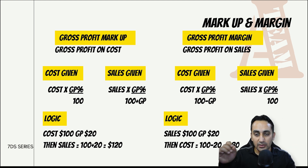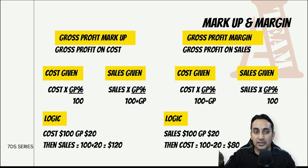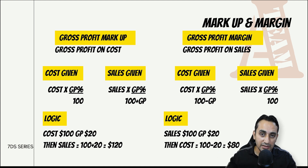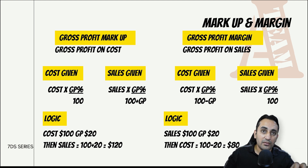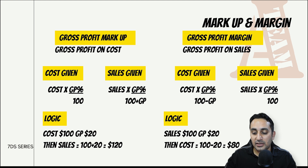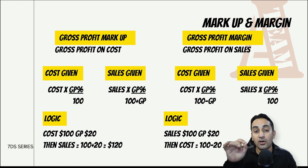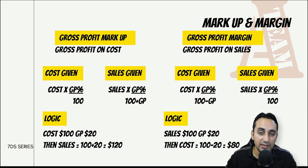Markup का मतलब हमेशा होता है gross profit on cost - यानी cost के ऊपर calculate किया जाने वाला gross margin। और margin का मतलब होता है gross profit margin - जब यह दे रखा हो तो समझो कि gross profit on sales calculate किया जा रहा है।